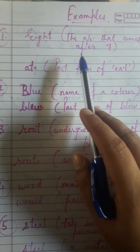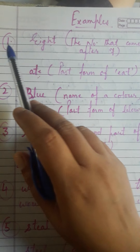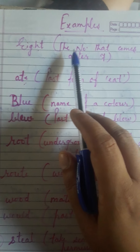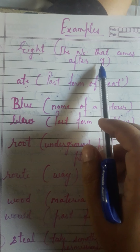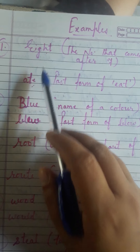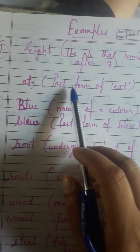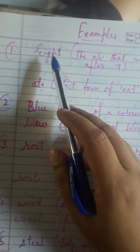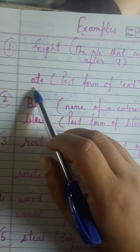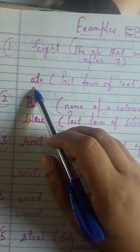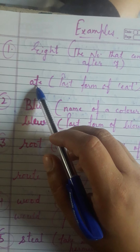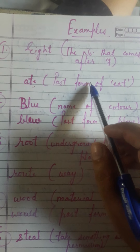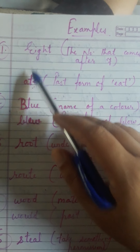Here are some examples of homophones. E-I-G-H-T, eight, means the number that comes after seven. A-T-E, ate, is the past form of eat. See here — the sound is same, eight and ate, but spellings are different and their meanings are also different.